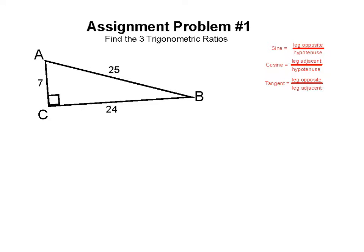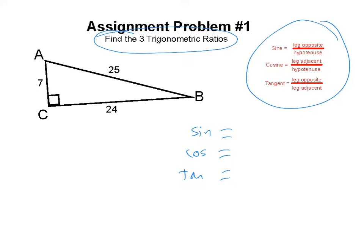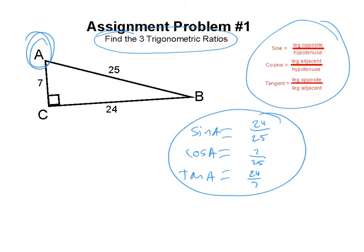Let's do a problem right out of our work. On problem number one, they want us to find the three trig ratios for angle A. So let's find sine, cosine, and tangent. Sine is the leg opposite over the hypotenuse — opposite leg is 24, hypotenuse is 25. Can't reduce, so sine of A = 24/25. Cosine of A is the leg adjacent over the hypotenuse — adjacent leg is 7, hypotenuse is 25 — so cosine of A = 7/25. Tangent of A is opposite over adjacent: 24 over 7. We can't reduce any of these.